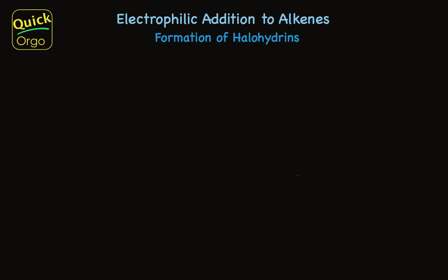I want to talk about making halohydrins from alkenes. Halohydrins are bromohydrins or chlorohydrins, depending on the exact halogen we talk about. In these examples I'll use bromine, but what I say here applies to the use of chlorine as well. The formation of a bromohydrin from an alkene involves addition of bromine to one carbon and a hydroxy group to the adjacent carbon.